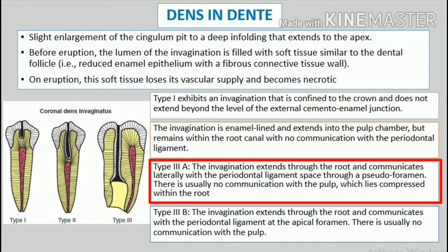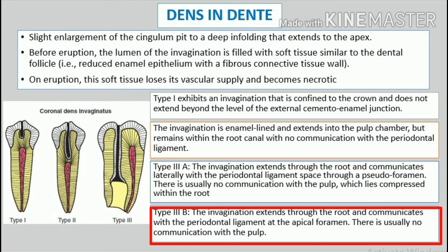Type 3a: the invagination extends through the root and communicates laterally with the periodontal ligament space through a pseudoforamen. There is usually no communication with the pulp, which lies compressed within the root. Type 3b: the invagination extends through the root and communicates with the periodontal ligament at the apical foramen. There is usually no communication with the pulp.